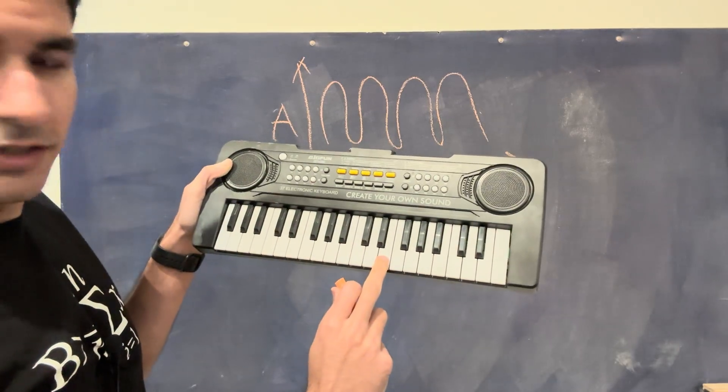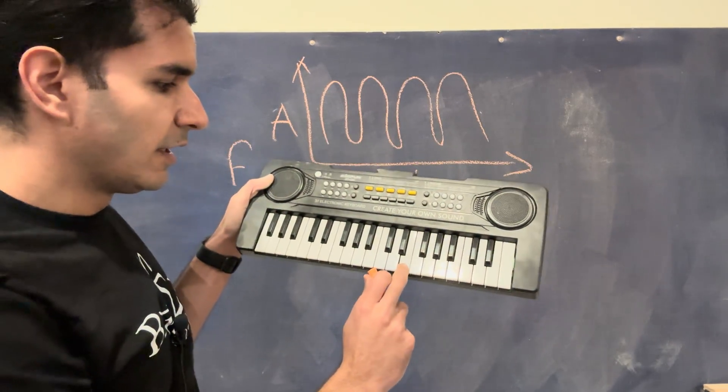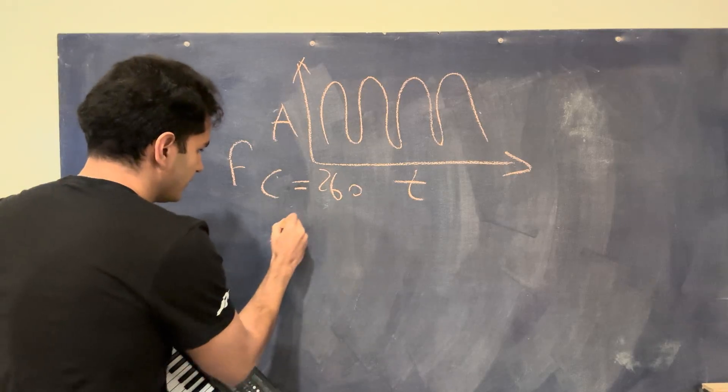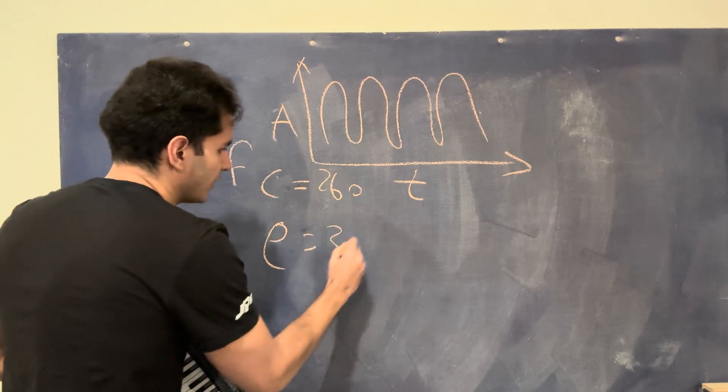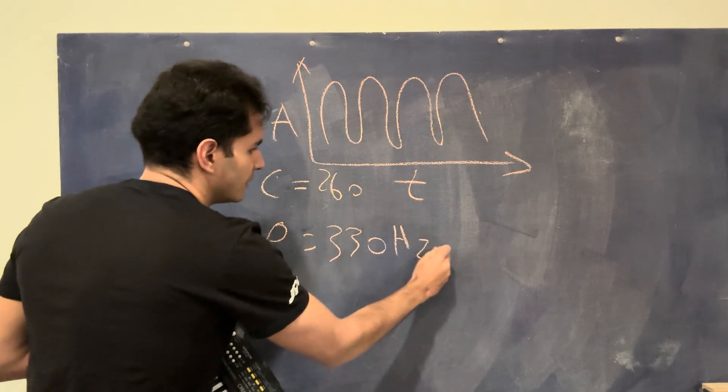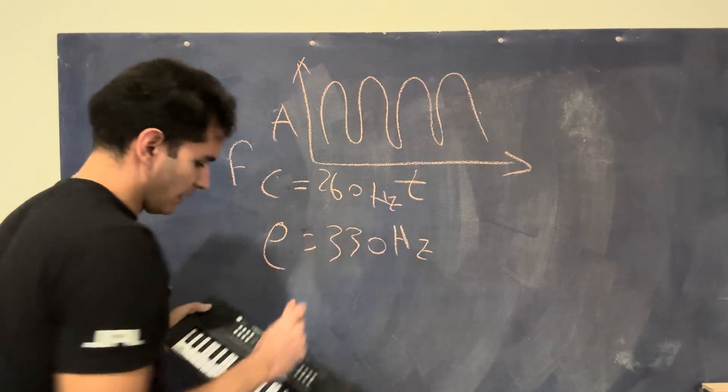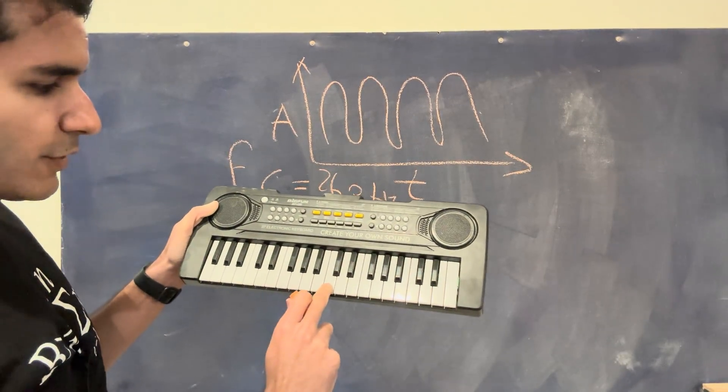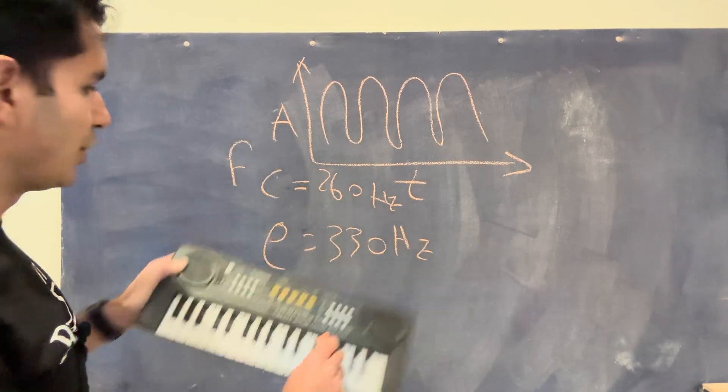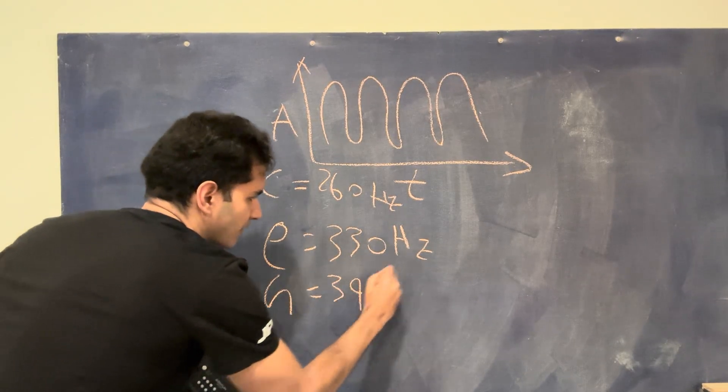And then if I go and I play a note next to it, let's say this one's an E, then let's say this one's like 330, I believe something like that. And then let's say we go one over. So we have this C, we have this E, we have this G, this G is going to be like 390, for example.